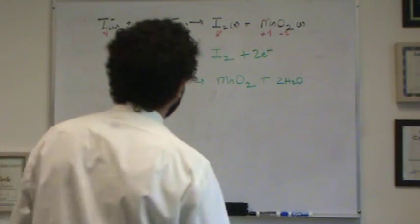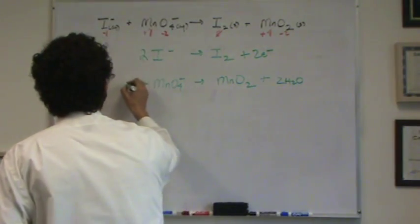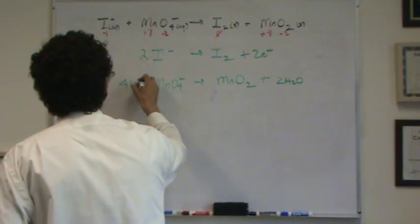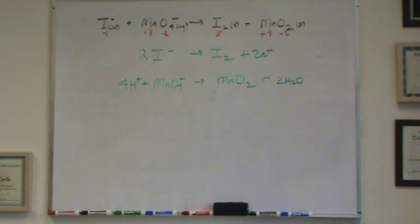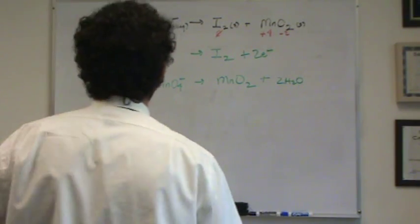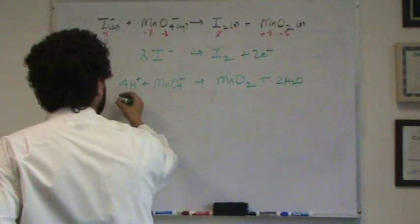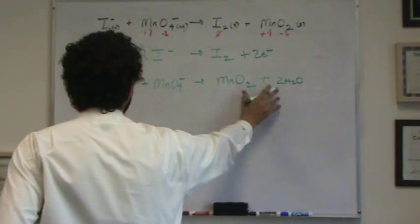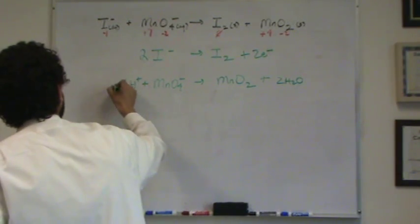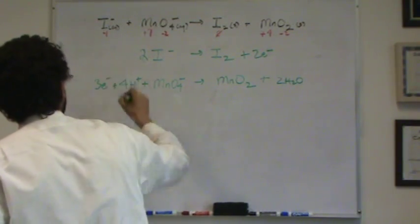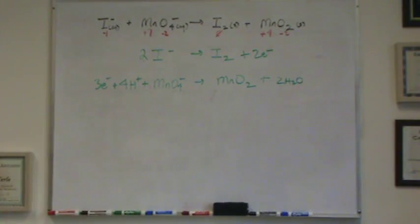And then the last step is to fix the charge. The overall charge on the right is zero, but on the left is plus four minus one, or three. So we've got three electrons there. So that should do it. My half reactions are done. I'm going to add these up, and these are simultaneous reactions.